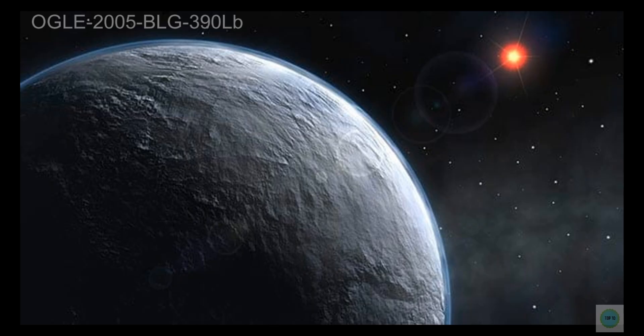Number 5 is OGLE 2005 BLG 390 Lb. OGLE 2005 BLG 390 Lb is a rocky exoplanet with a slim atmosphere found right in the middle of our own Milky Way. All three components made stargazers suspect that it could contain life when it was found. Nonetheless, they presently believe that it doesn't because of the exoplanet's super low temperature. The surface temperature on OGLE 2005 BLG 390 Lb is near minus 220 degrees Celsius (minus 364 degrees Fahrenheit), which is too low to support life as far as we might be concerned.